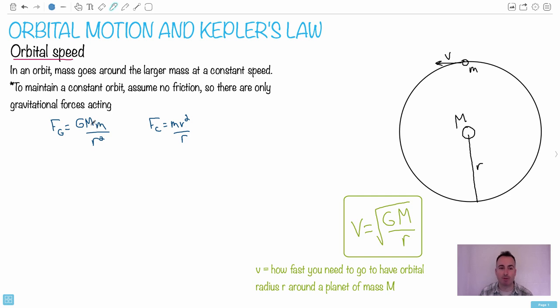So by that sense, you can say Fg equals Fc. This is often the first part to starting orbital mechanics questions: set your gravitational force equal to the centripetal force.